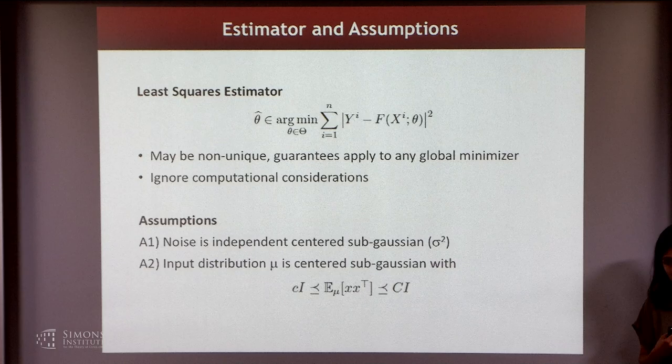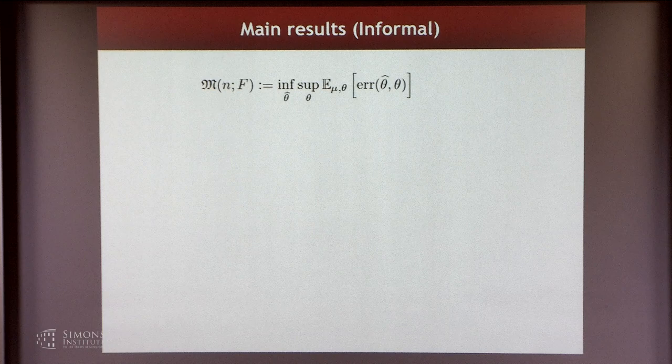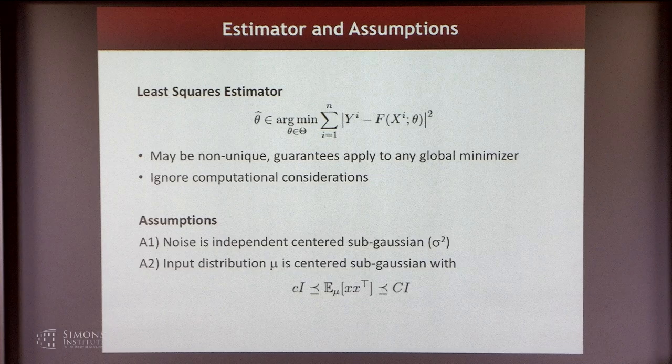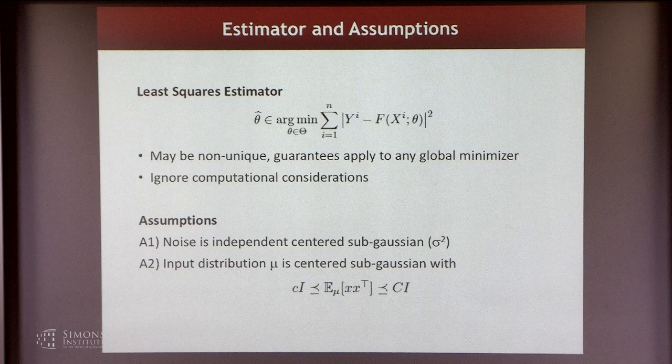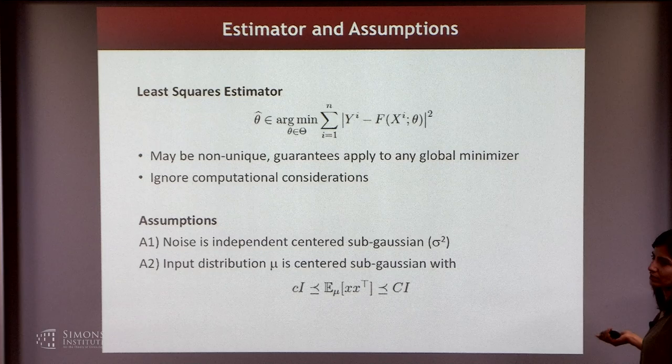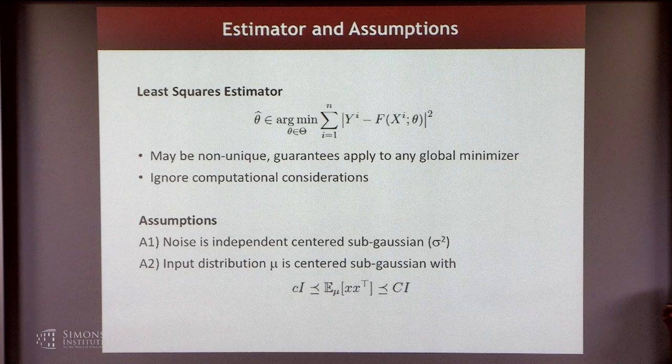The isotropic assumption is crucial but can be relaxed. It means the marginal is unimodal. We are not considering complicated situations like semi-supervised learning. The goal is simply to say for CNNs and RNNs, what governs their sample complexity? Is it the ambient dimension or the ambient input sequence length in the case of RNN? Or is it the simplified structure that these models encode?